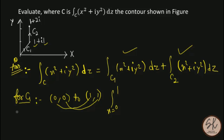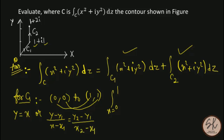We get y = x using the line formula: (y − y1)/(x − x1) = (y2 − y1)/(x2 − x1). Here y1 = 0, x1 = 0, y2 = 1, x2 = 1, giving (1 − 0)/(1 − 0) = 1. So finally y = x. You can also read this directly from the graph.